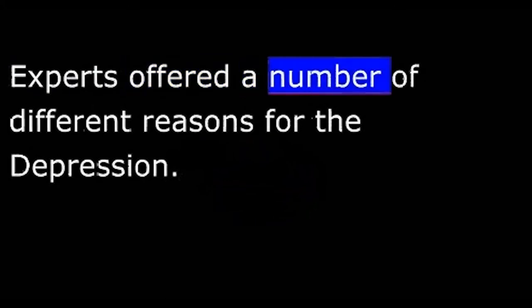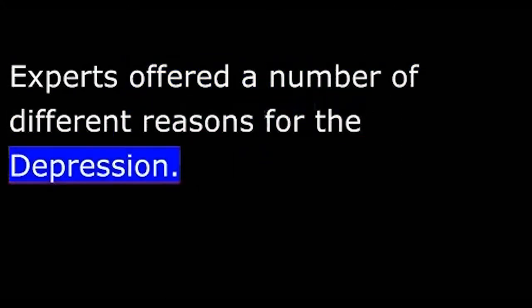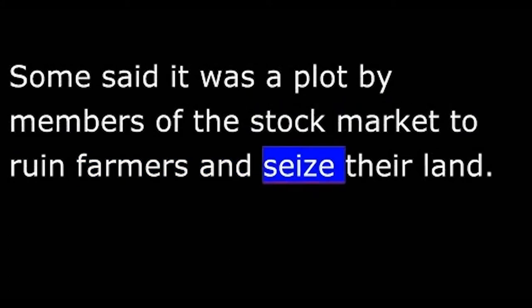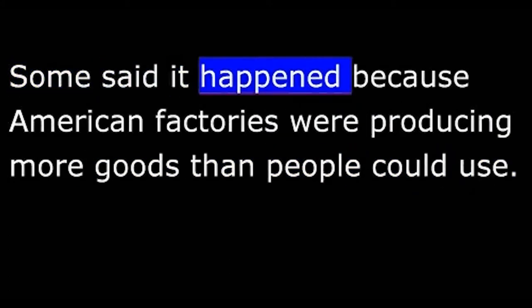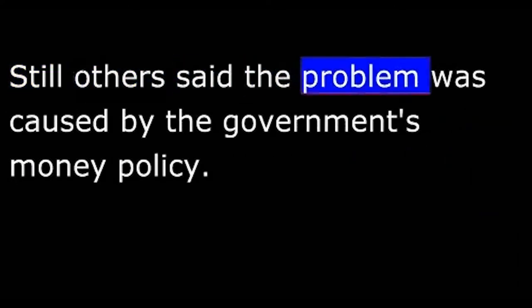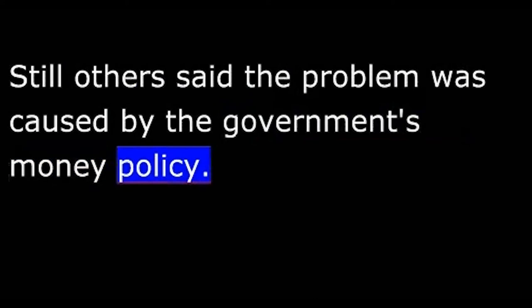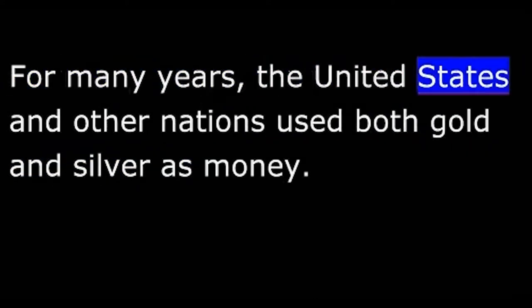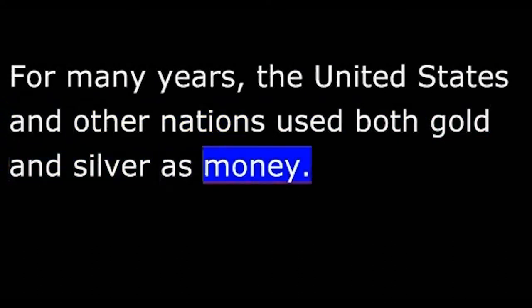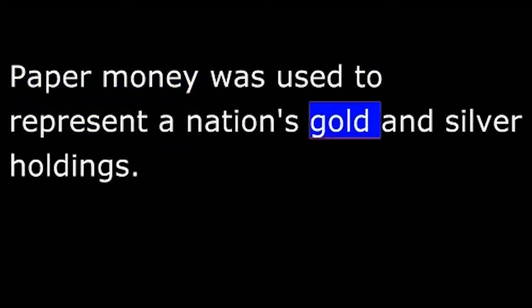Experts offered a number of different reasons for the Depression. Some said it was a plot by members of the stock market to ruin farmers and seize their land. Some said it happened because American factories were producing more goods than people could use. Still others said the problem was caused by the government's money policy. For many years, the United States and other nations used both gold and silver as money. Paper money was used to represent a nation's gold and silver holdings. The value of silver was tied to the value of gold.